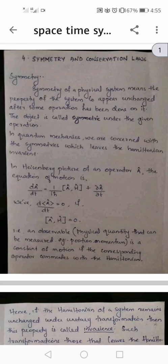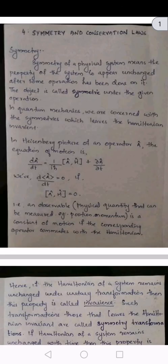As we have studied in Heisenberg picture of an operator A, the equation of motion is dA by dT is equal to 1 by iH bracket A, H plus ∂A by ∂T. We have ∂A by ∂T equal to 0 if [A, H] is equal to 0.